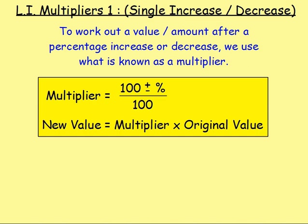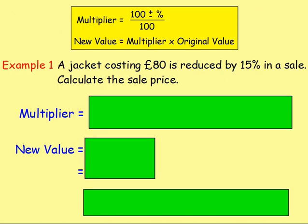Let's try some basic examples. Example one: a jacket costs £80 but is reduced by 15% in a sale. What is the sale price? So we can see we have the jacket costing £80 and it's reduced by a percentage. We could just work out the 15% and take it away — we can do that. But again, this lesson is all to do with getting used to using multipliers, so we can apply that to the second and third lessons in this chapter. This lead-in lesson should make that slightly easier.